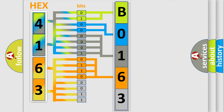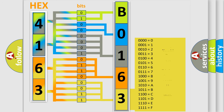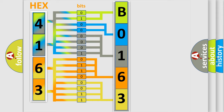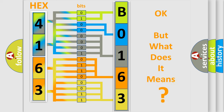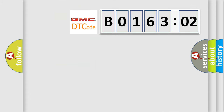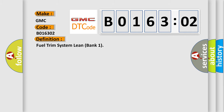A single byte conceals 256 possible combinations. We now know in what way the diagnostic tool translates the received information into a more comprehensible format. The number itself does not make sense to us if we cannot assign information about what it actually expresses. So, what does the diagnostic trouble code B016302 interpret specifically for GMC car manufacturers? The basic definition is: fuel trim system lean bank one.